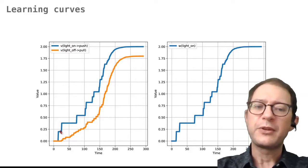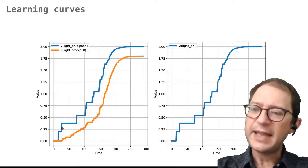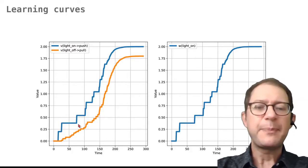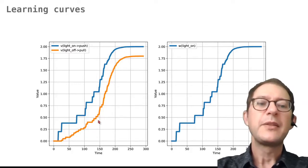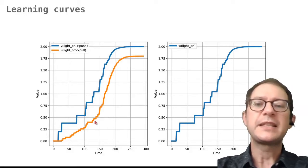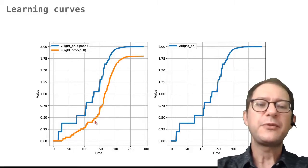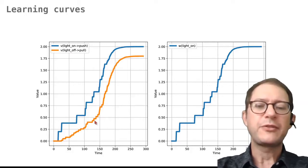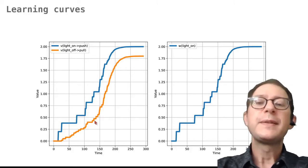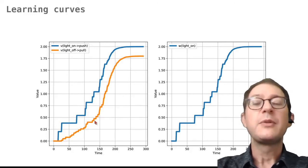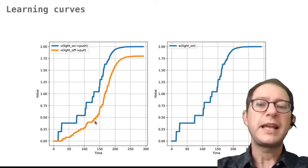Going back to the left part of the figure, we see that soon the light gains some conditioned value, and as soon as that happens, the associative strength of the first action also starts to increase. This increase is slow at first because the light still has little conditioned value, but as the value of the light increases, the first action is also learned rather quickly in the end. At the end, both actions have a large associative strength, meaning the whole sequence is performed reliably: when the light is off, the rat pulls the chain and turns the light on; when the light is on, the rat pushes the lever and gets food.